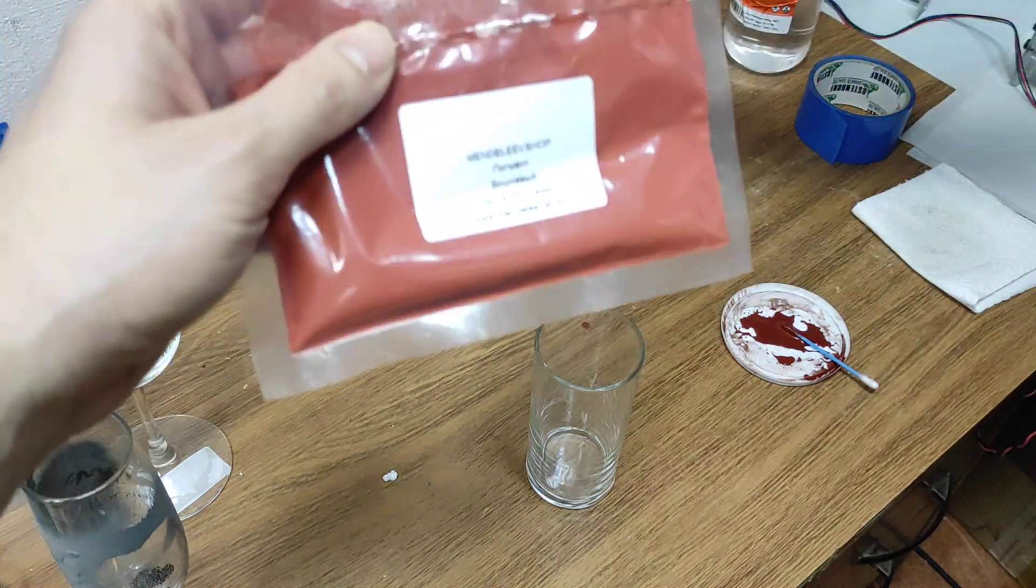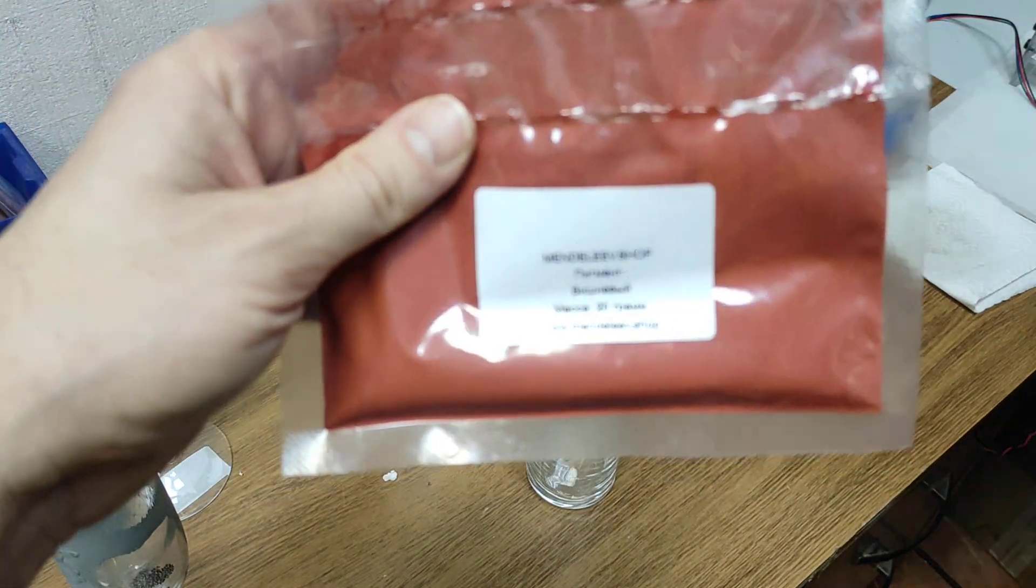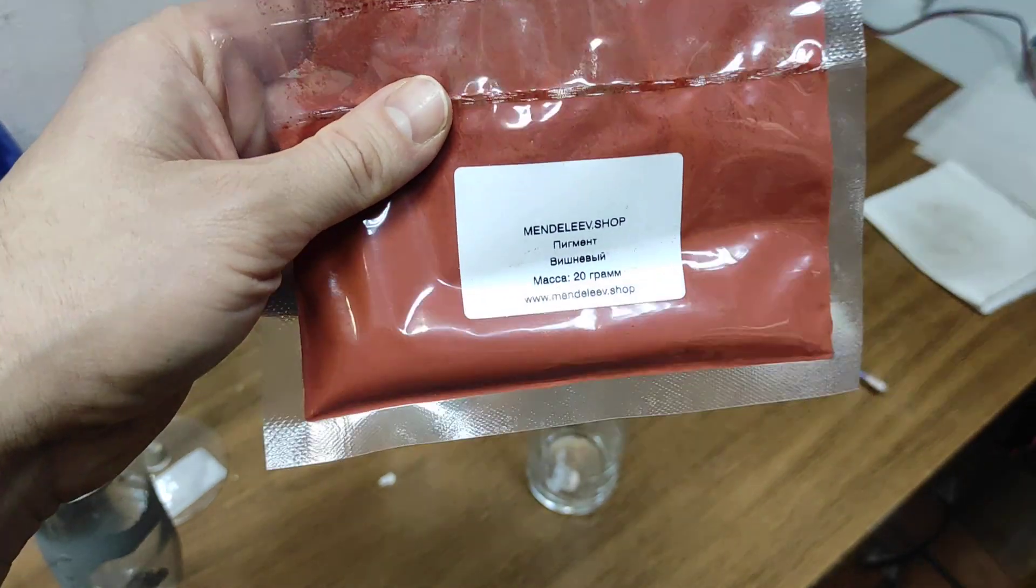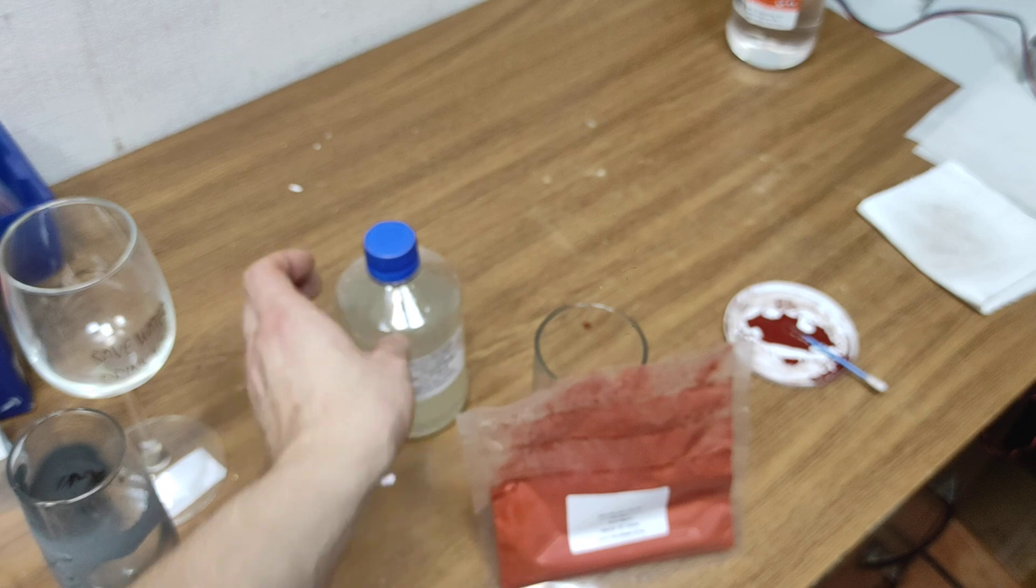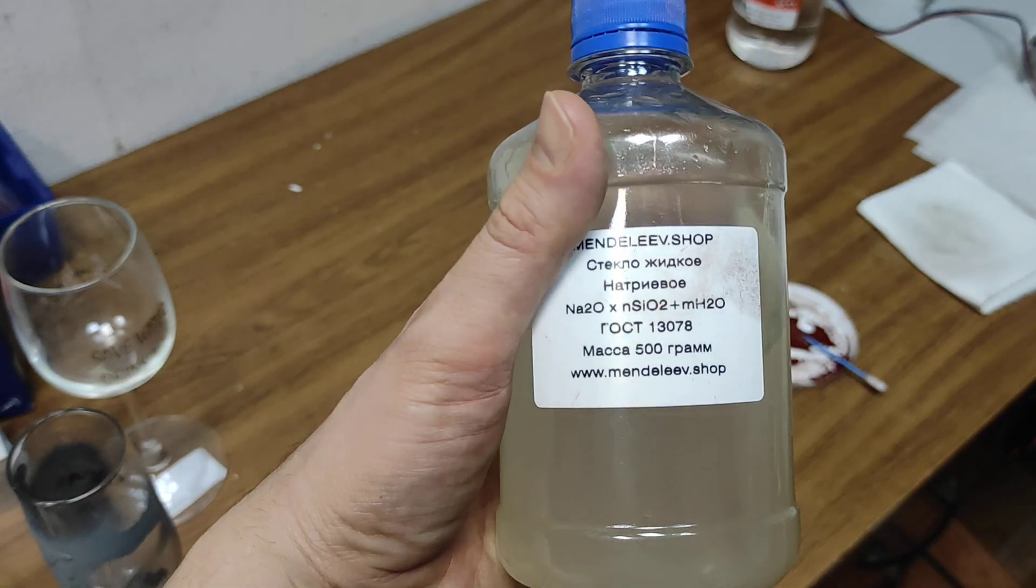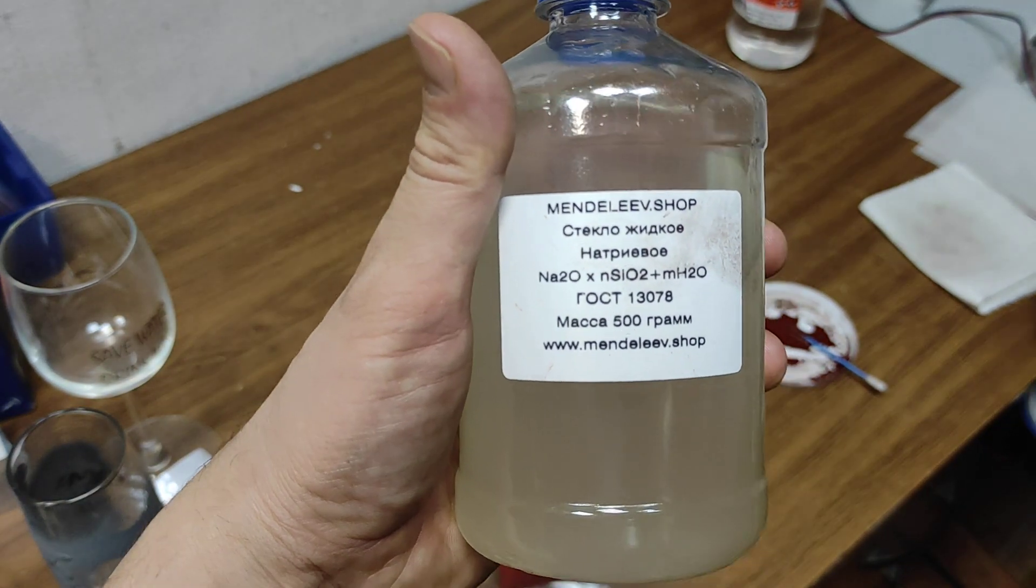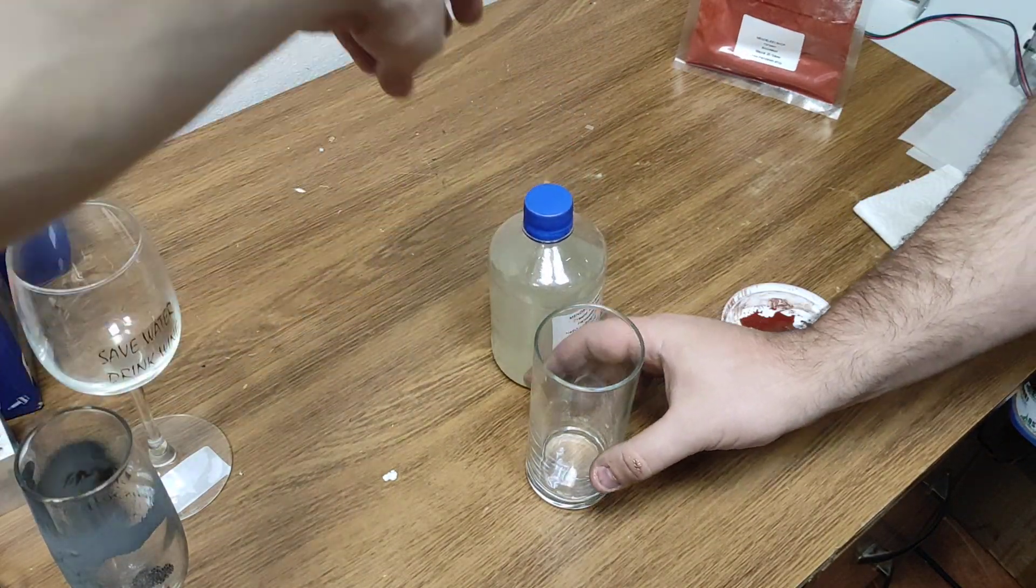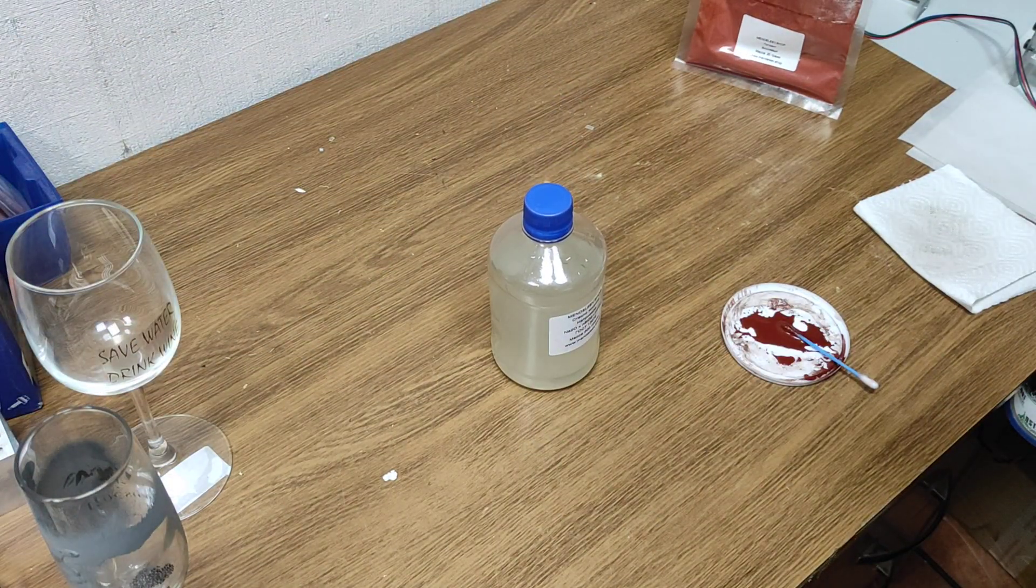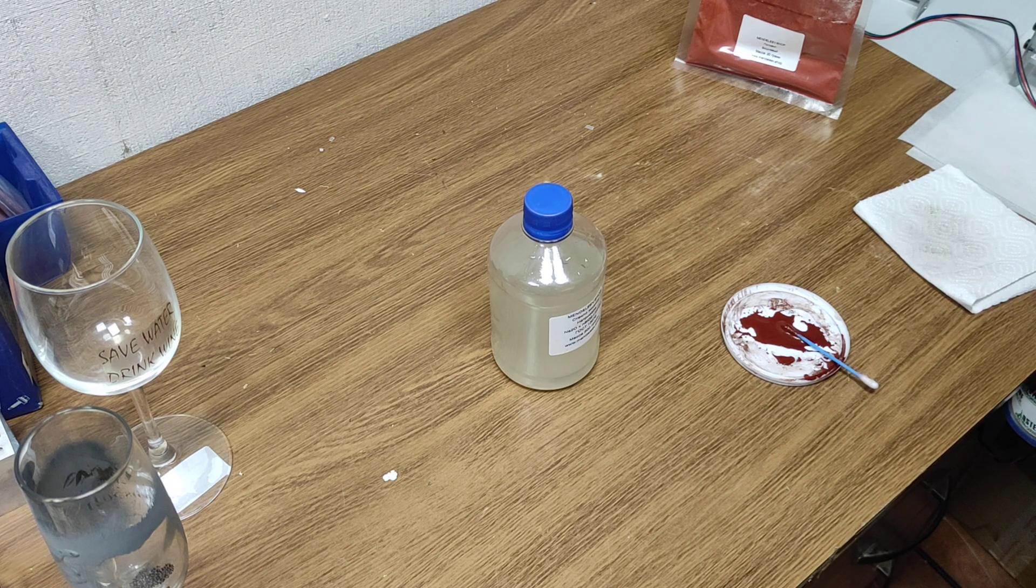First of all we have this powder, it's called a red pigment, and we have liquid glass. So now we need to mix it and then apply it on the mug, on a drinking glass.